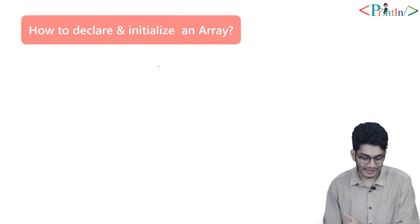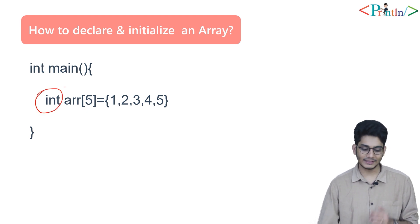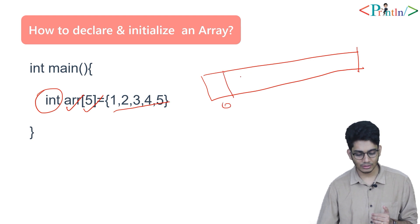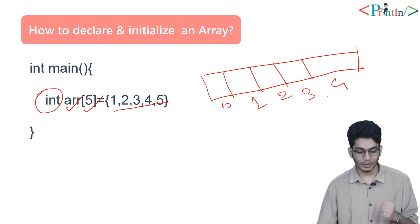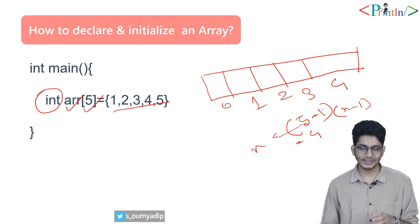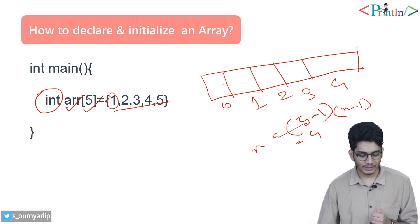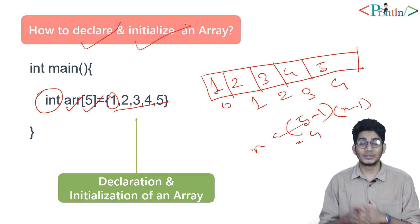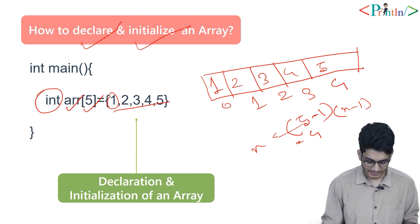Now let's talk about how to declare and initialize together. We write 'int', the data type, then the name, then the size — here size is 5. The indexes go 0, 1, 2, 3, 4; the last index is 4, which is 5 minus 1, so n minus 1. When I write the values 1, 2, 3, 4, 5 in the initializer, each value is placed into the corresponding index. This is declaration and initialization of the array together.